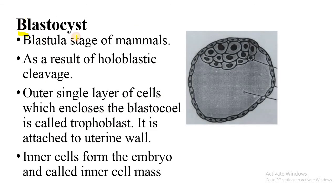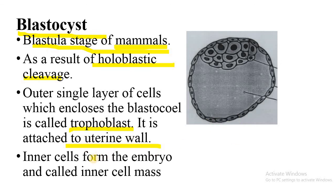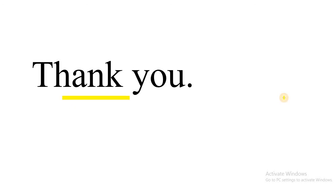Next is blastocyst — the blastula stage of mammals, occurring as a result of holoblastic cleavage. The outer single layer of cells is called the trophoblast, which is attached to the uterine wall. The inner cluster of cells is called the inner cell mass. This blastocyst type of blastula occurs in mammals, for example in humans. Thank you for listening and watching.